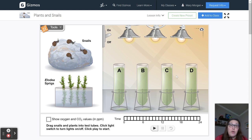In the center of the screen there are four test tubes labeled A through D. These are your experimental test tubes, and this is where you'll put all of the variables together to run your experiments. There are a lot of different variables in this Gizmo that you can adjust.